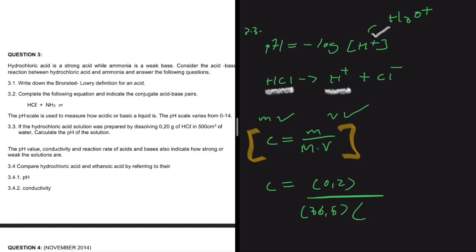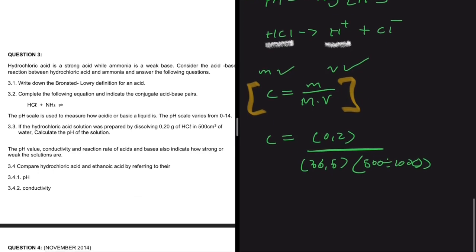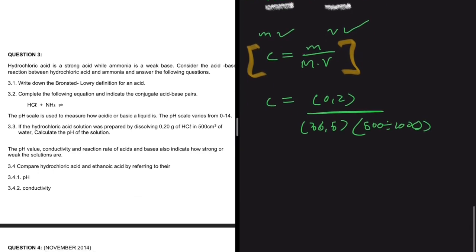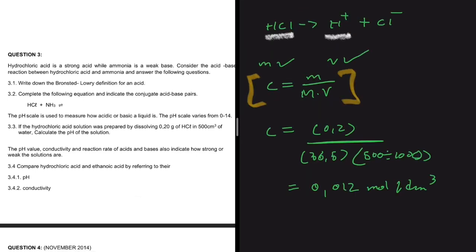The concentration will be 0.2 divided by the molar mass of HCl, that is 36.5, multiplied by the volume which is 500 cm³. So that will be 500 divided by 1000 - we have to convert it to dm³. And then if you put that in your calculator, you're going to get a concentration of 0.012 mol/dm³.